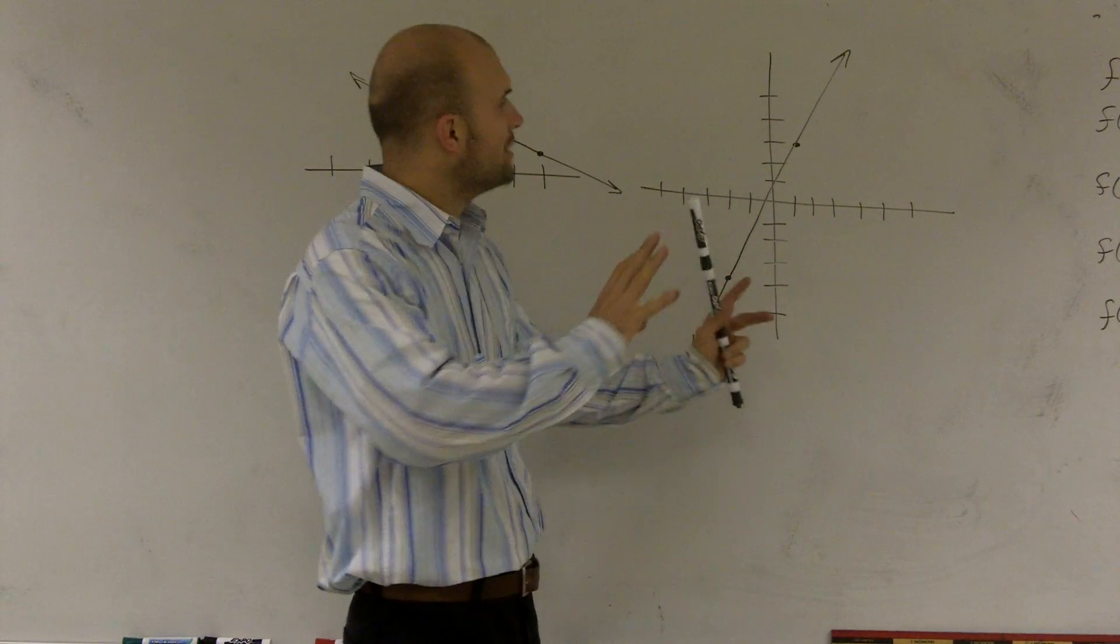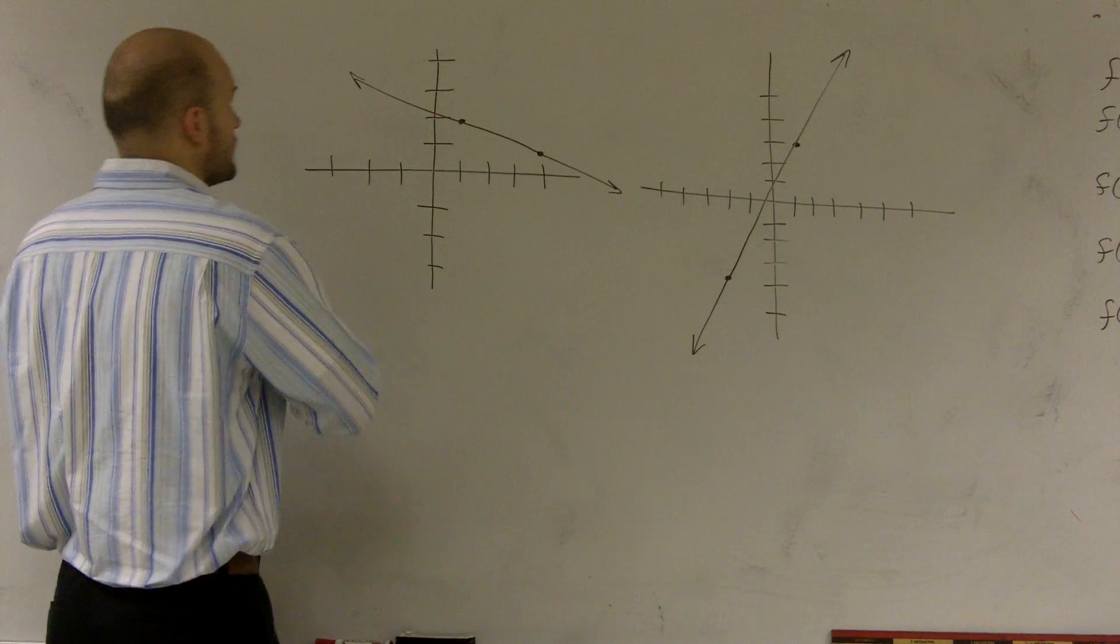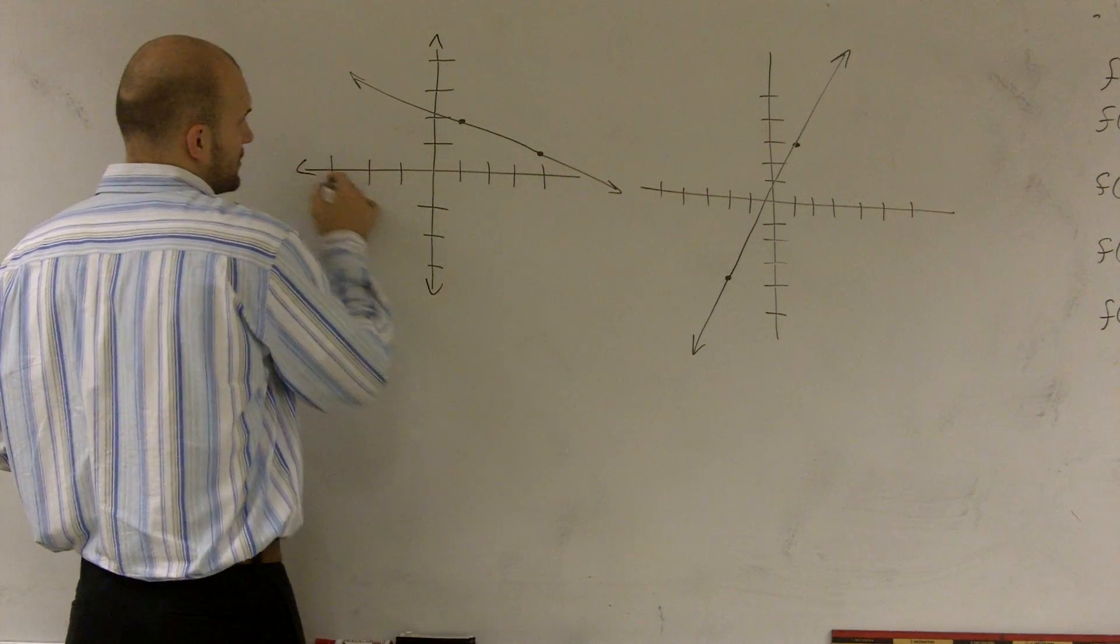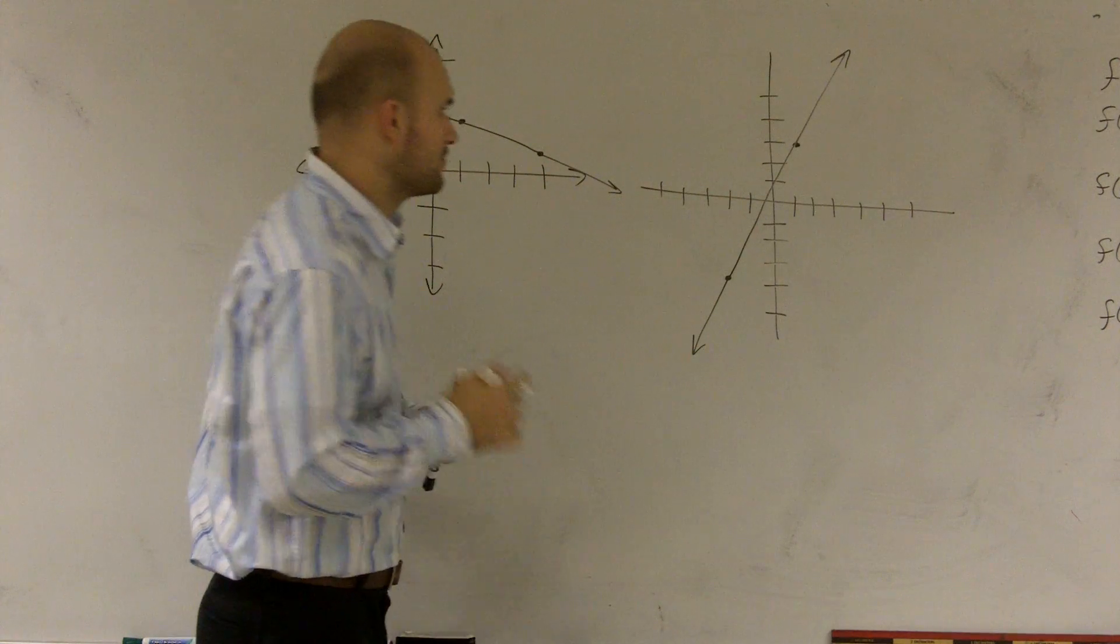Alright, what I'd like to do is show you how to find the slope given a graph with two points.